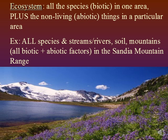An ecosystem is all the species — all the biotic things in one area — plus all the non-living things, all the abiotic things in one area. A lot of times people will use ecosystem when they mean community without understanding the differences. Using the Sandia Mountains as our example, the ecosystem includes all the living things — birds, bees, grass — plus all the abiotic stuff: the streams, the river, the abiotic parts of the soil, the actual rocks, the mountains themselves. Community is only biotic things; ecosystem is all abiotic and biotic things in one area.